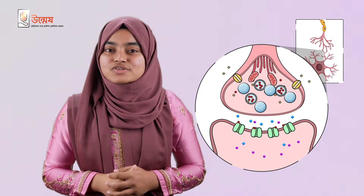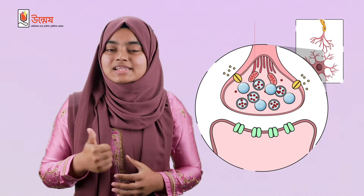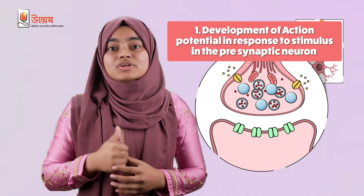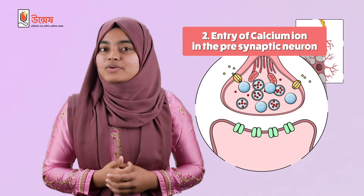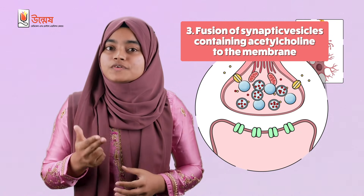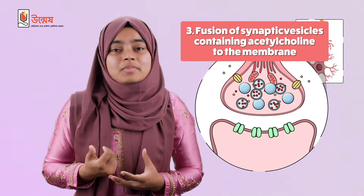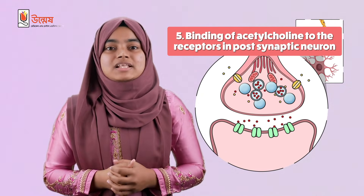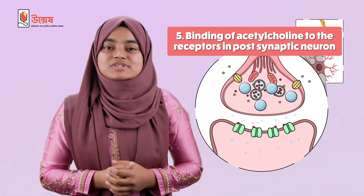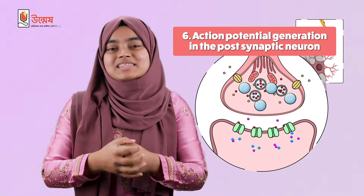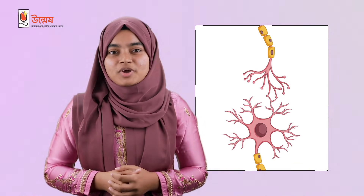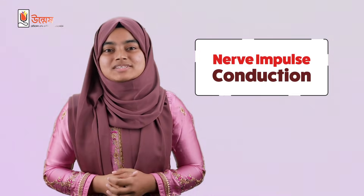Let's quickly recap all the key points of this whole process. Firstly, development of action potential in the presynaptic neuron in response to a stimulus. Then entry of calcium ions into the presynaptic neuron, fusion of synaptic vesicles containing acetylcholine to the membrane, release of acetylcholine into the synaptic cleft, then binding of acetylcholine to the receptors in the postsynaptic neuron, and action potential generation in the postsynaptic neuron. With that, I am concluding our today's topic of discussion — nerve impulse conduction. I hope you all found it interesting. Thank you for watching.